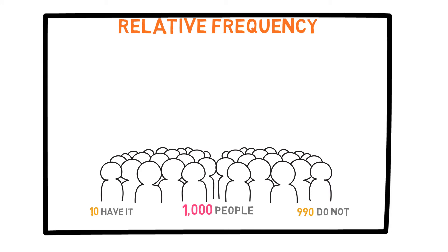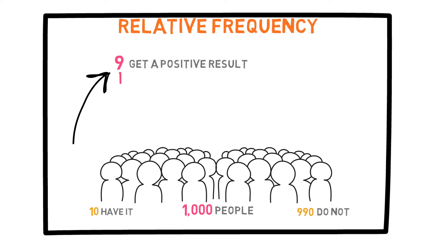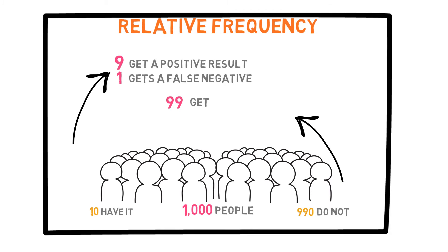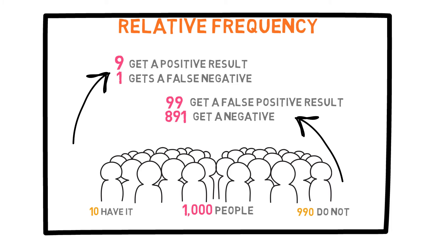They all go and have the test done. Because the test is 90% accurate, only 9 out of 10 people with the disease get a positive result and one gets an incorrect result of negative. Then, of the remaining 990 people, 99 get a positive result and 891 get a negative result.